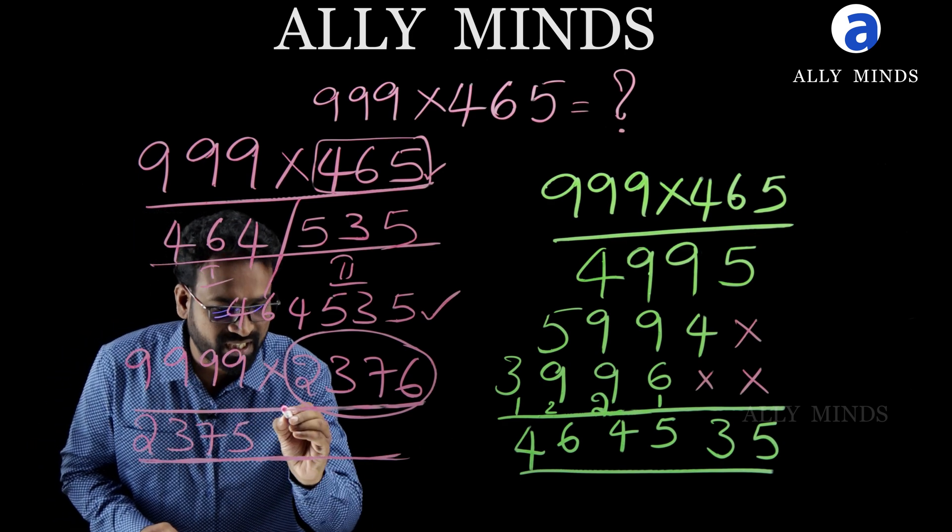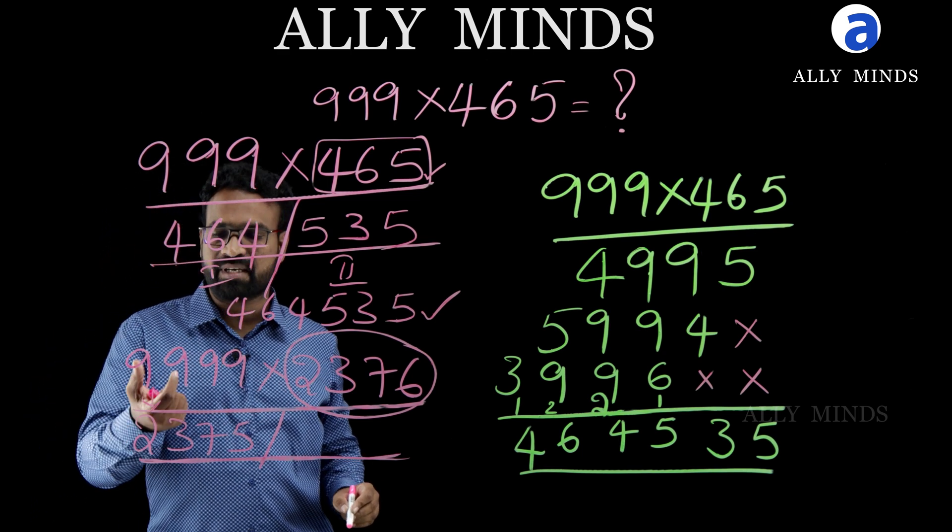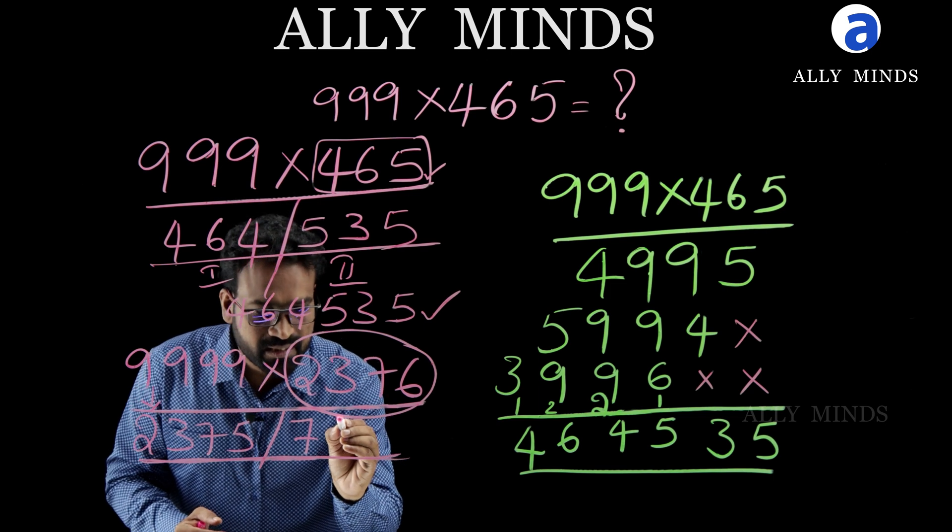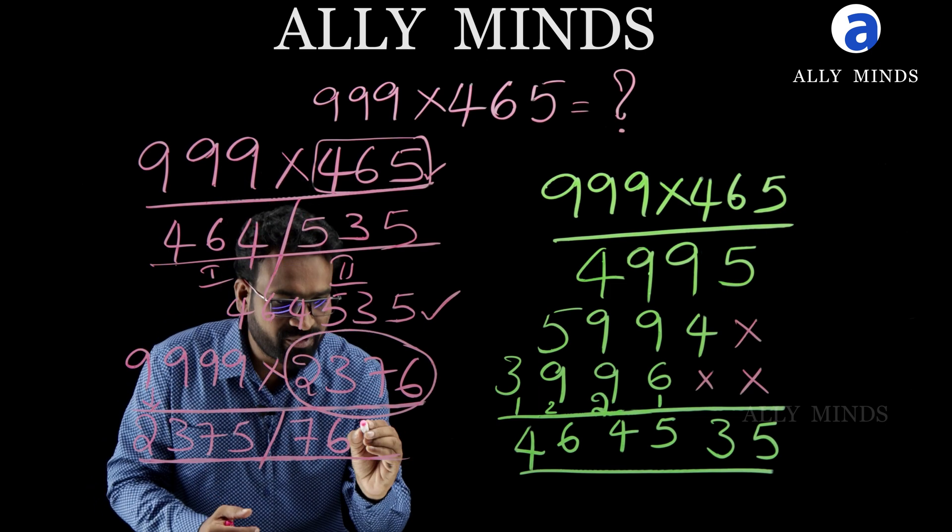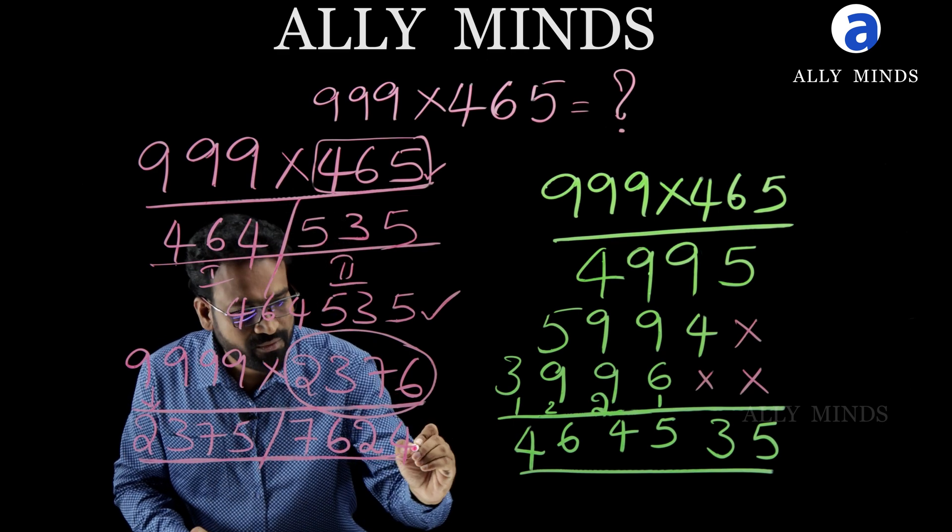This is the first part of the answer and for second part, we have to subtract each and every digit of this first part from 9. Now, 9 minus 2 is 7, 9 minus 3 is 6 and 9 minus 7 is 2 and 9 minus 5 is 4. This is the final answer.